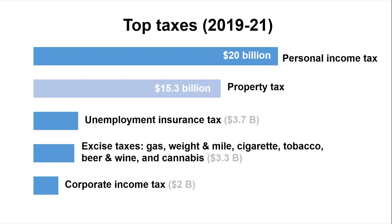The property tax stands out because, of all the taxes listed, it is the only one assessed at the local level — all the others are state-level taxes. The property tax is the main way local governments in Oregon fund local services. It pays for things like libraries, parks, and recreation, and a good chunk also goes to K–12 education.